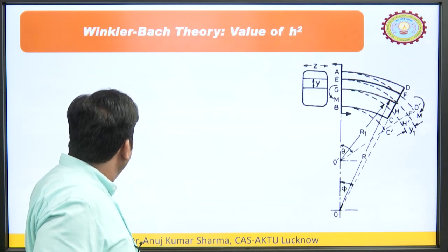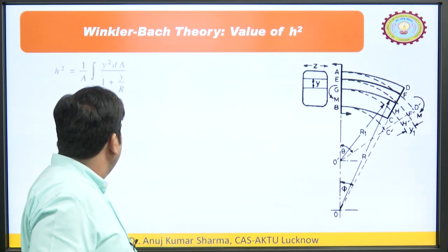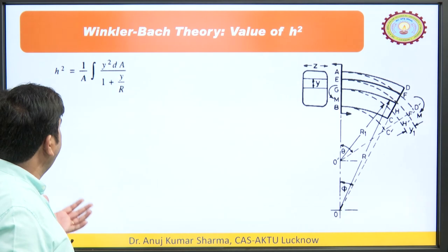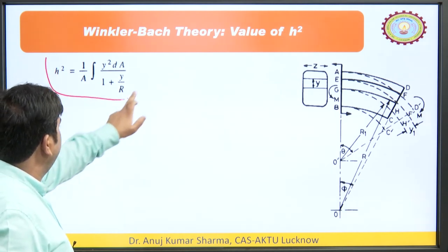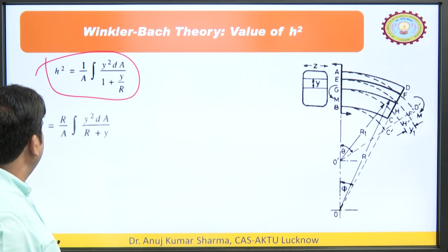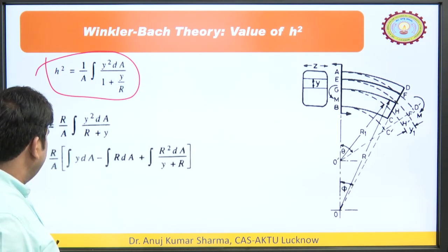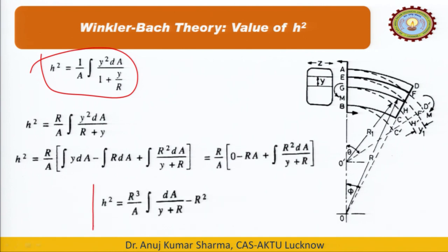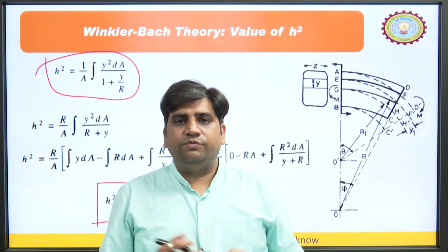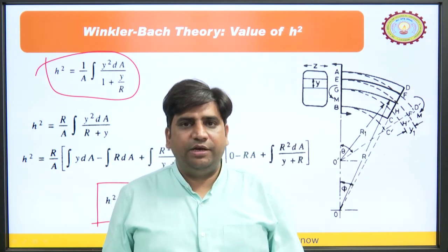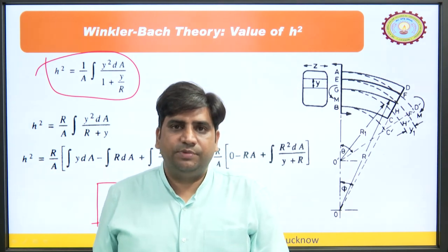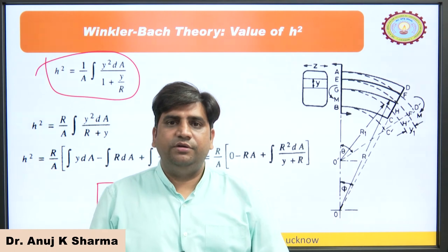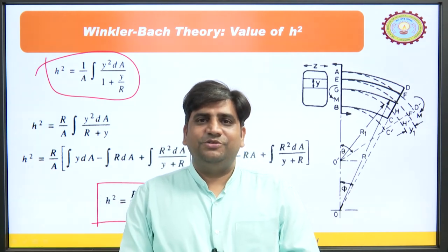The value of h² is also very important. It depends upon the cross section. The formula is: h² = (R/A)∫dA/(y + R) · R² − R² = R³/A · ∫dA/(y + R) − R². This topic is slightly lengthy, so we should practice at home. Once we memorize all the formulas, we can attempt the numerical problems. Very simple numericals come on this topic. I hope you enjoyed the long derivation. Thank you so much.